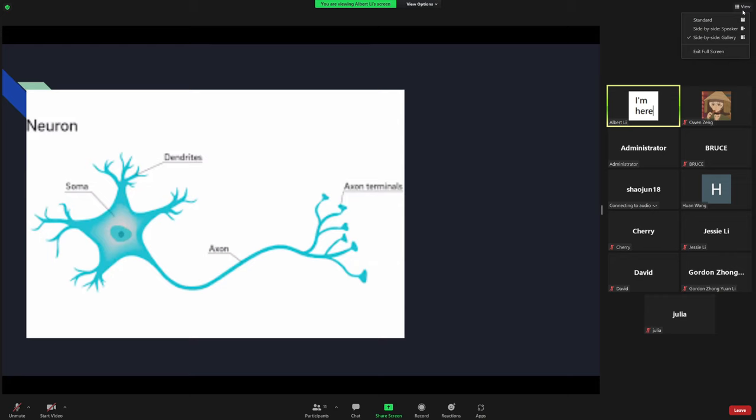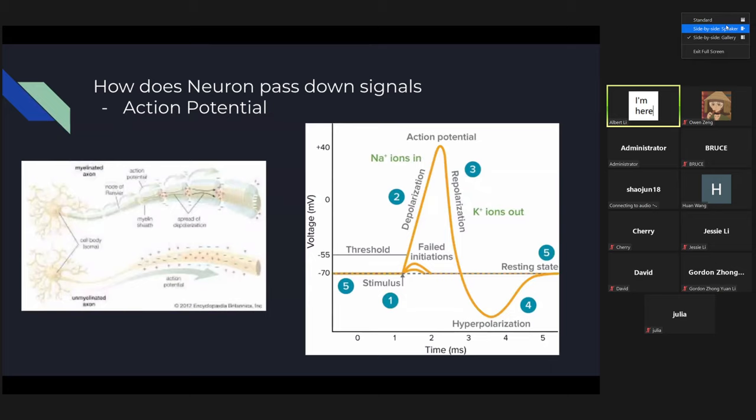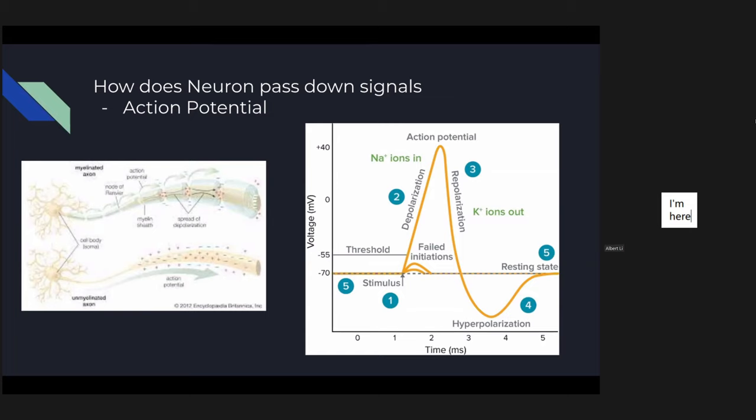Now we can look at a very famous mechanism for how signals or impulses are passed down. For example, when your hand touches something, how does your brain know it? That is through a process called the action potential. At the resting state, the neuron has a more negative charge inside because of its chloride ions, compared to the outside which has many potassium and sodium ions that are very positive. This difference in charge is maintained by the membrane, which has different channels that regulate the crossing of those charges. Once those charges change, a current is produced to pass down the impulse.